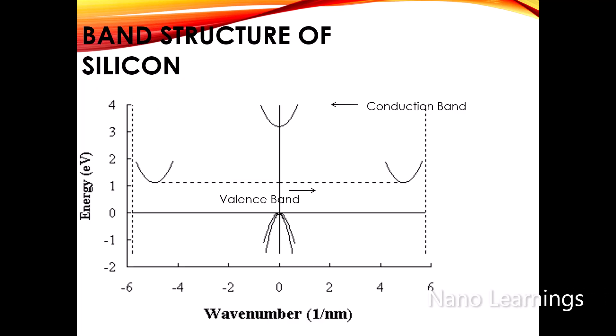This is the E-k diagram of silicon, which is commonly used in most devices. The figure shows that the maximum of the valence band lies at wave number k = 0, and the minima of the conduction band lies at a different value of the wave number. It is also known as an indirect band gap.